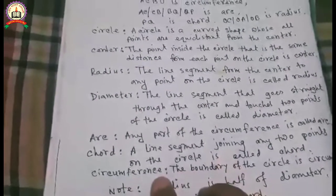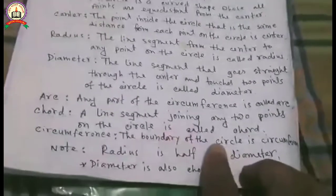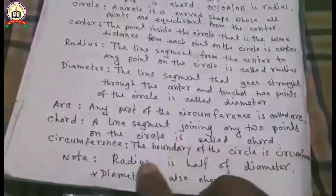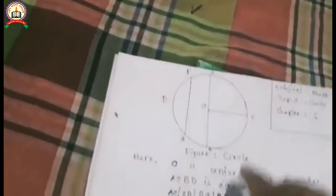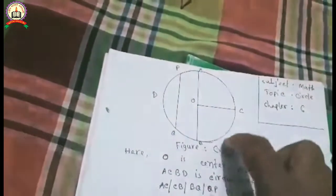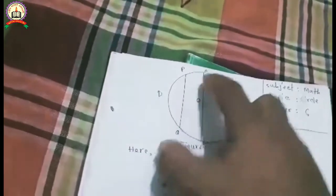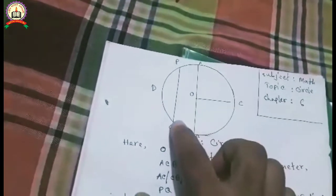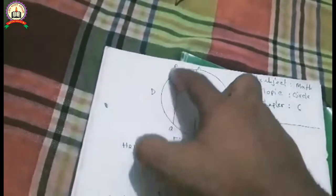Circumference. The boundary of the circle is called circumference. Here, this boundary of the circle is called circumference.